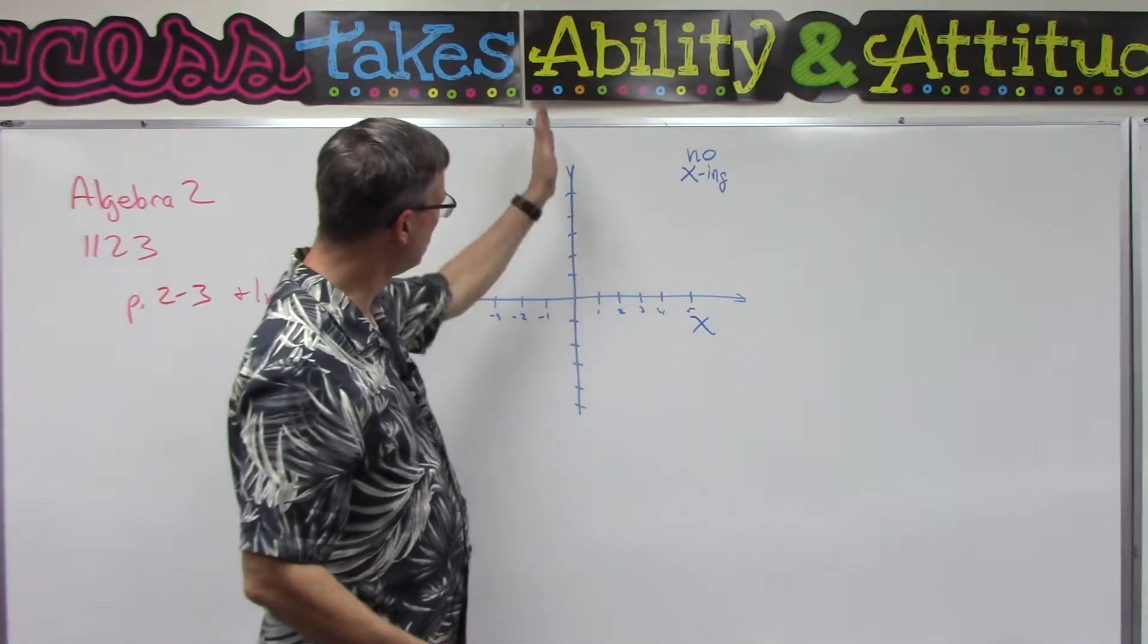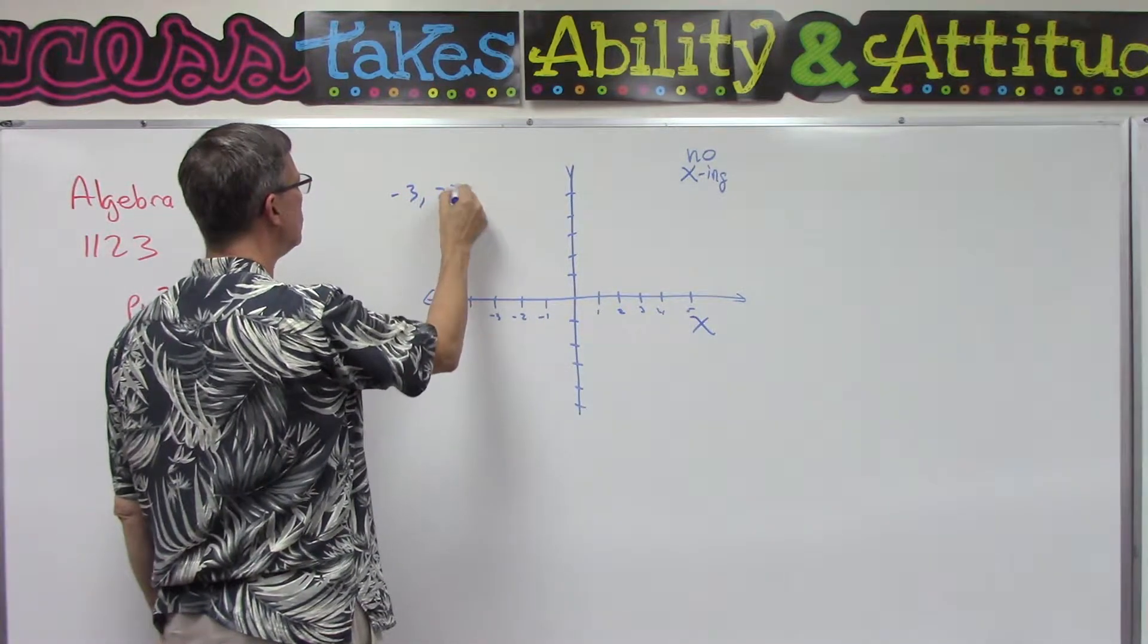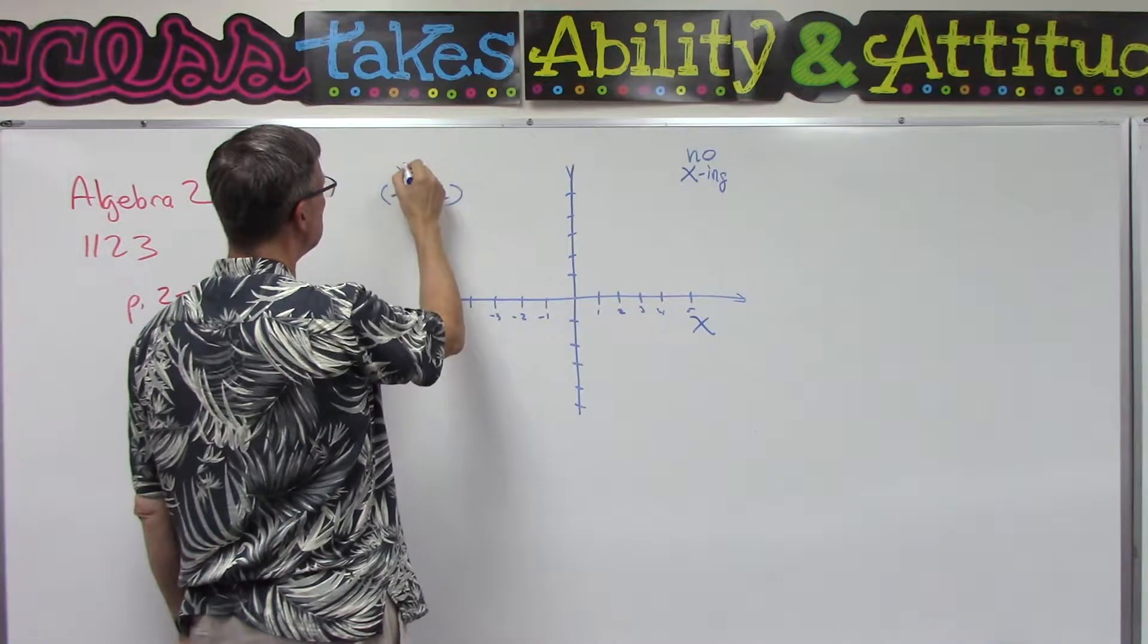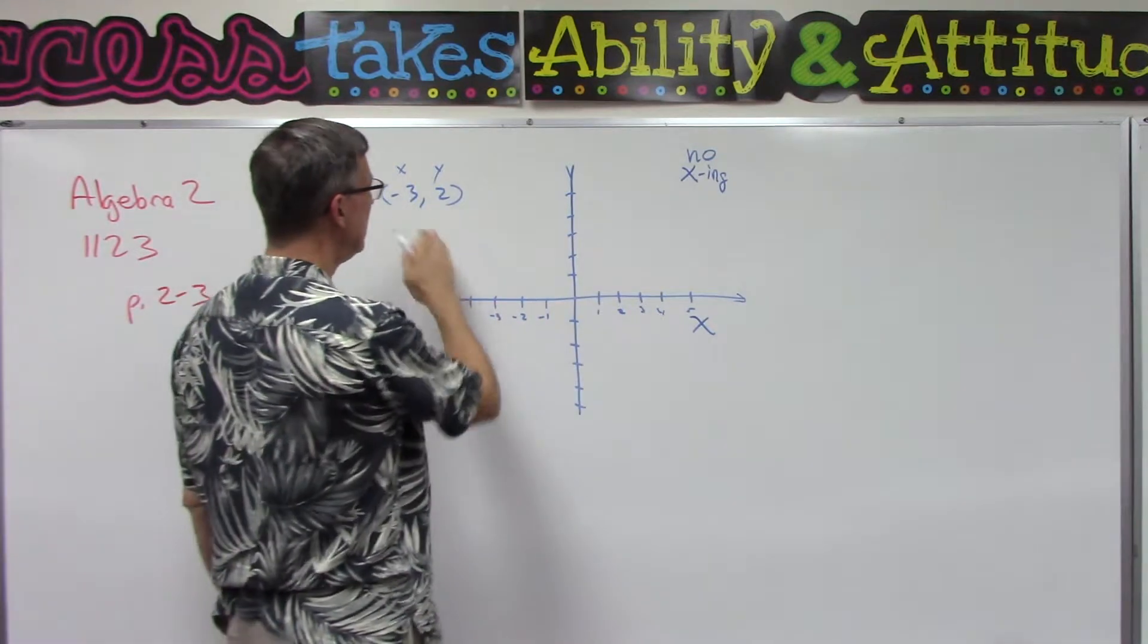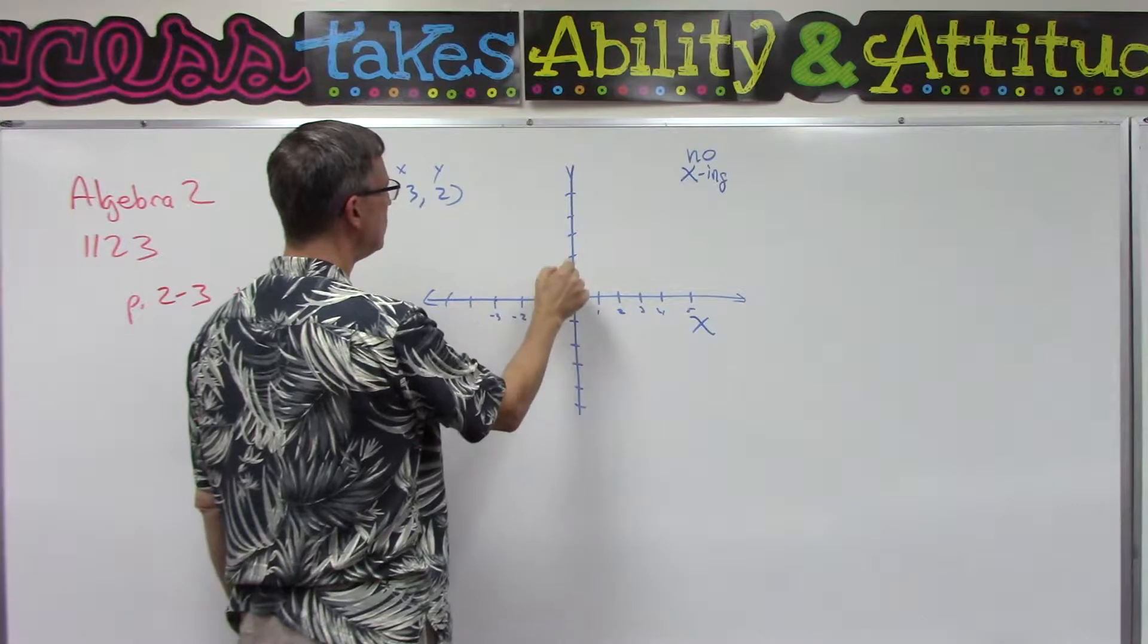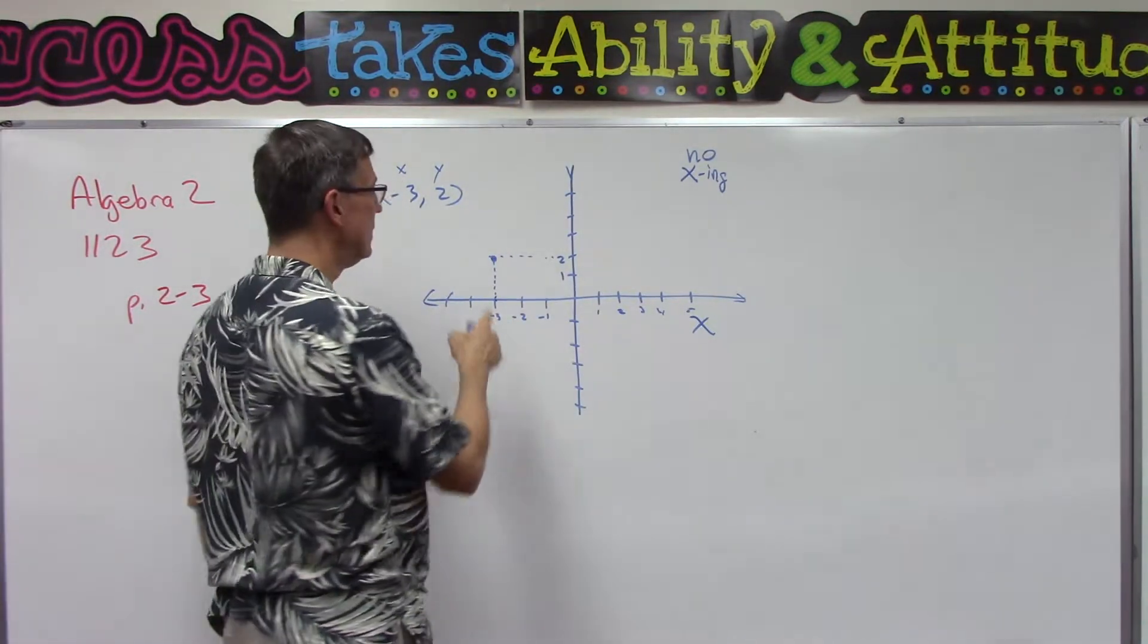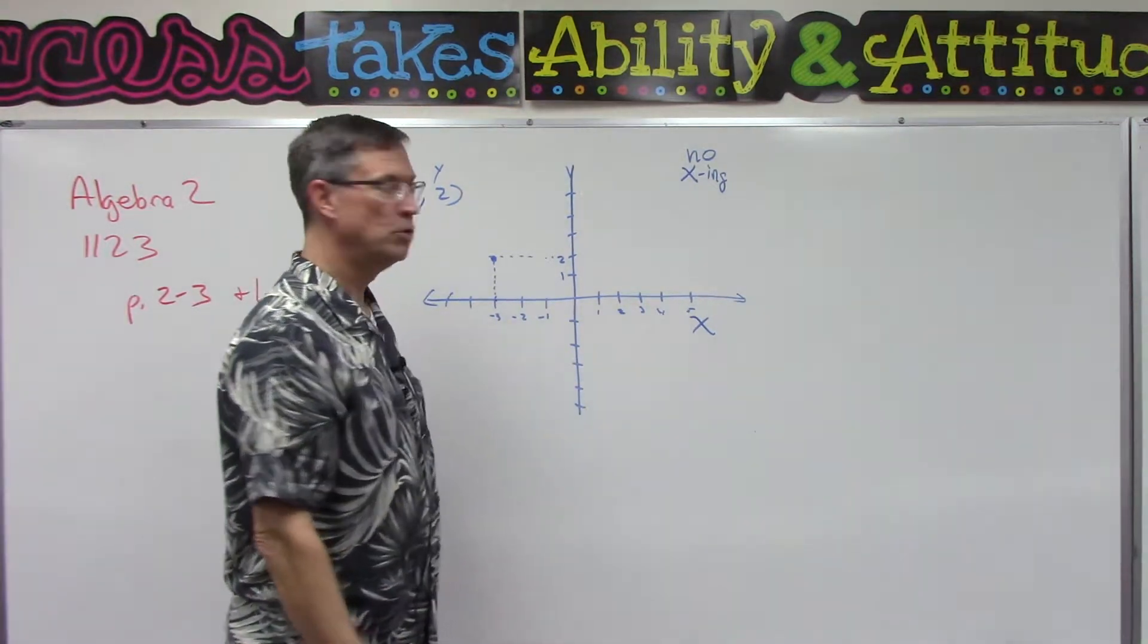The X goes across, Y goes up and down. Then we can take any random points, like (-3, 2), and we can find that point. Again, hopefully this is review for you, but maybe you need this little reminder: the first one is always the X, second one is always the Y—it's just like alphabetical order. So we're going to find the -3 on the X-axis, then we're going to go up to the 2 here, and we're going to see where do these intersect. They intersect right there at that point. So that is the point (-3, 2).